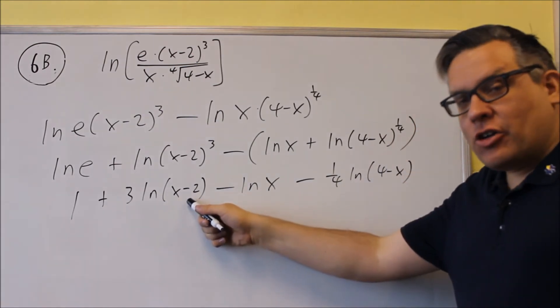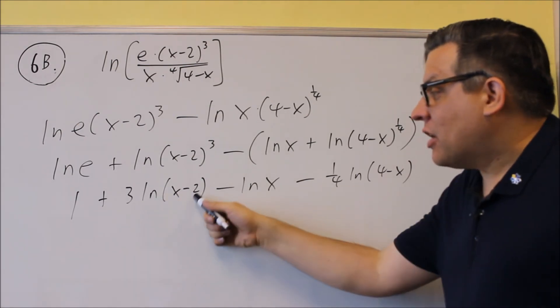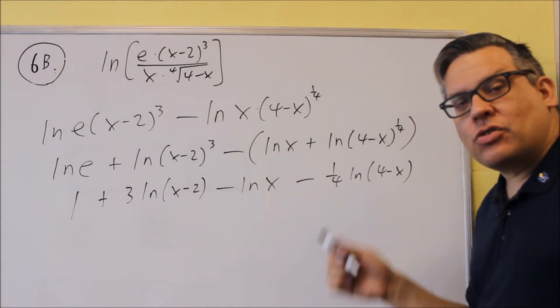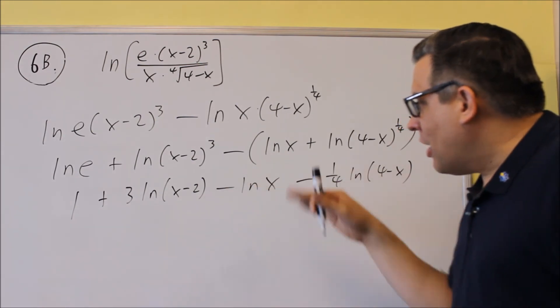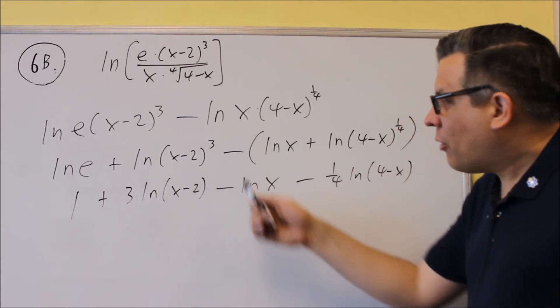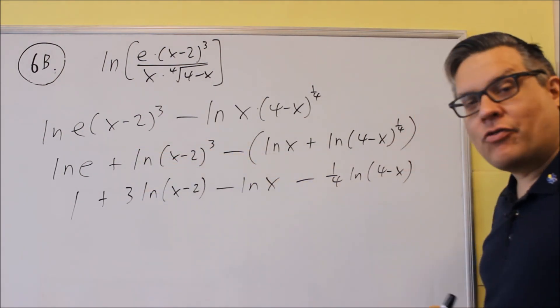The inside part, you're not allowed to break down anymore. You can't do ln x minus ln 2. It only works if you have two things multiplied or divided inside is when you're allowed to expand them out. And so always the powers on top, you can always put those down in front.